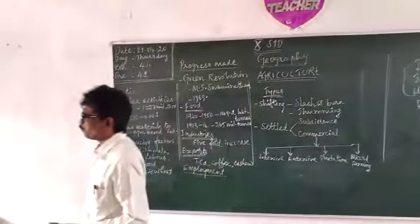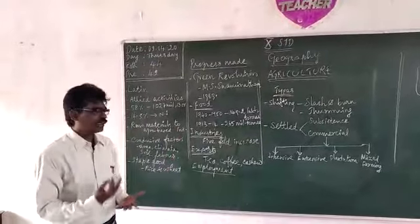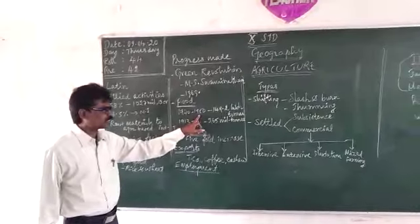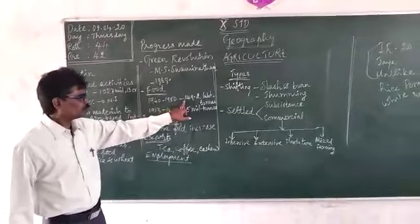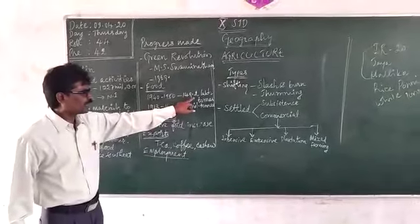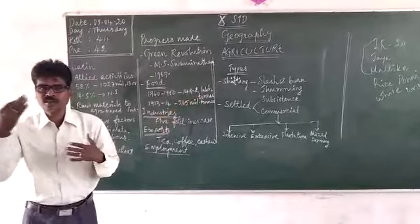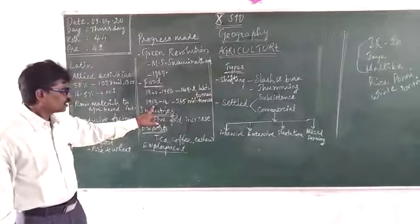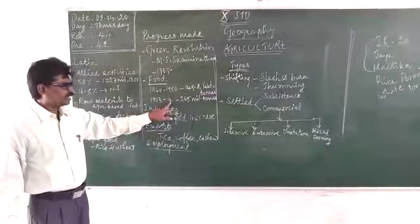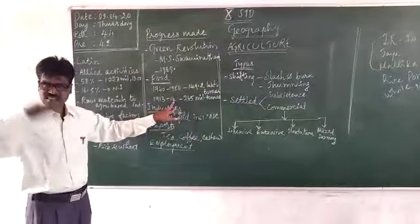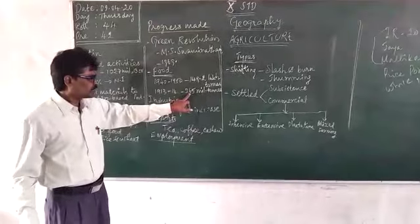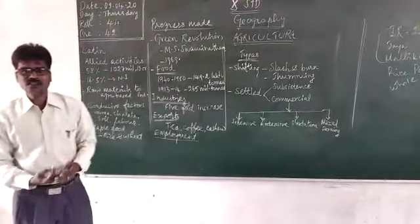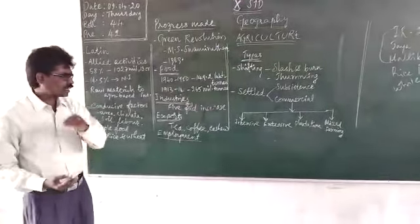Then the food output has been increased. In 1940-15, the calculation says only 149.2 lakh tons of rice were being produced. But in the calculation for 1930-14, it has tremendously increased to 265 million tons. So it's a drastic improvement in the field of agriculture production.